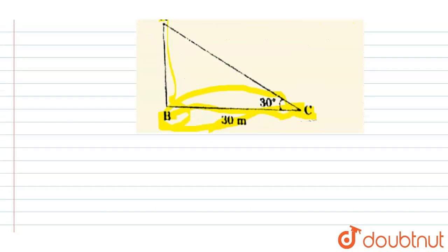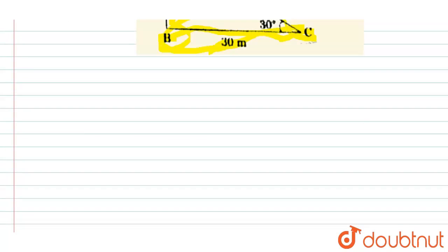Then this question, simply in triangle ABC, apply tan theta that is tan 30 degrees is equal to AB upon BC.